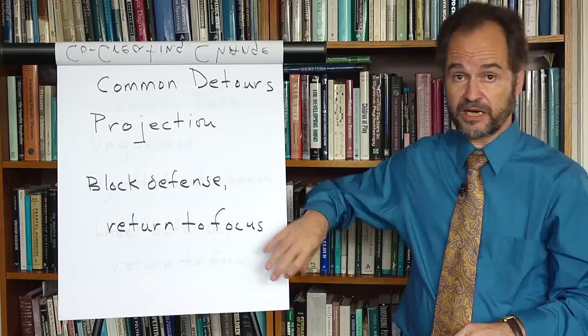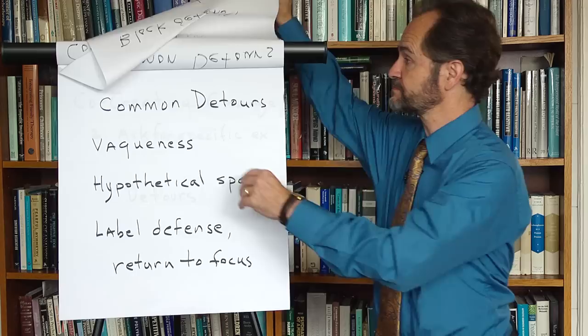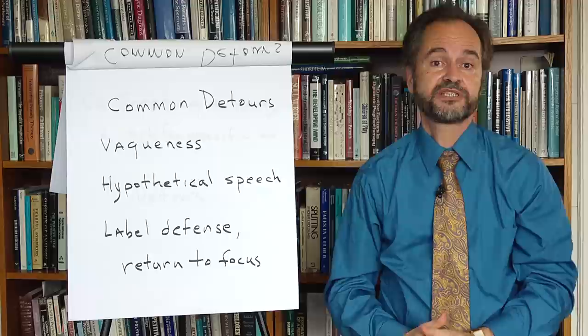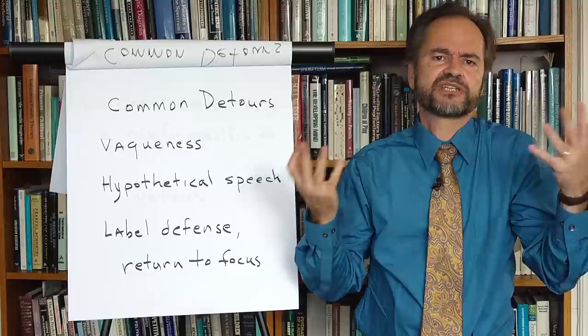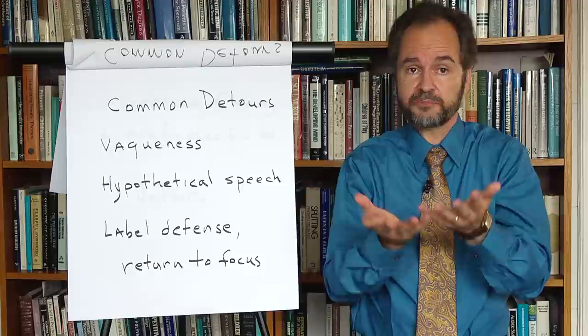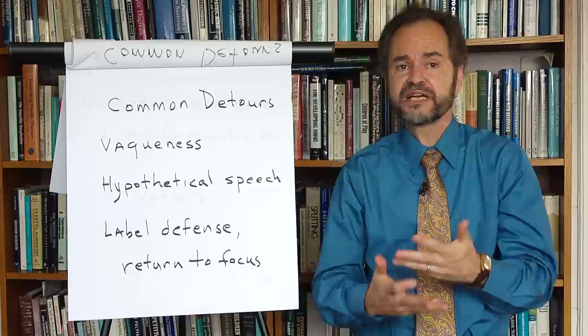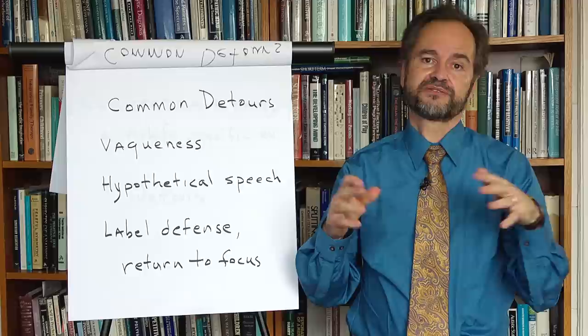Now, another common obstacle to forming a therapeutic alliance is the defense of vagueness. Suppose you ask, what's the problem you'd like me to help you with? And the patient responds, that's not a specific problem, really. It's more of an in-general kind of a problem. Such a vague response makes it really impossible for you to know what the problem is you could help the patient with. This defense of vagueness keeps you from understanding the patient in any clear or useful way. If you ask him to describe this in-general kind of a problem, the patient will remain general and vague.